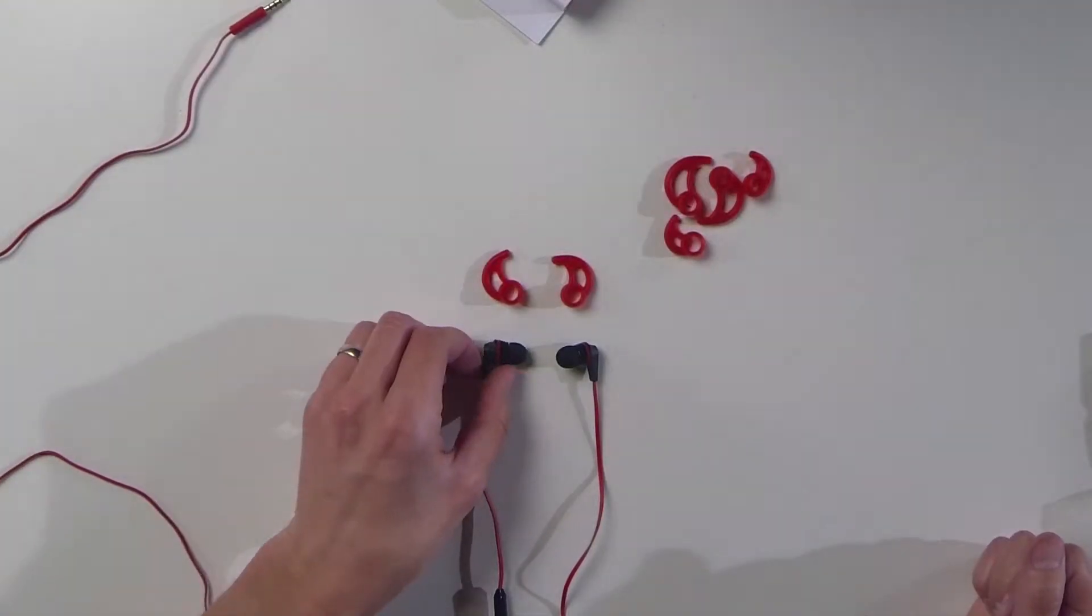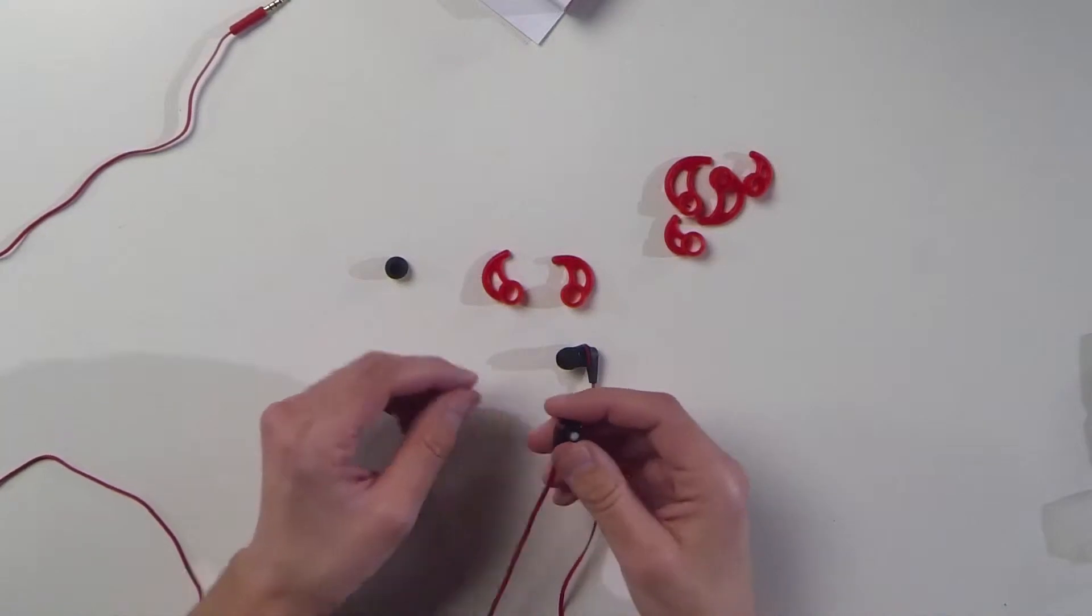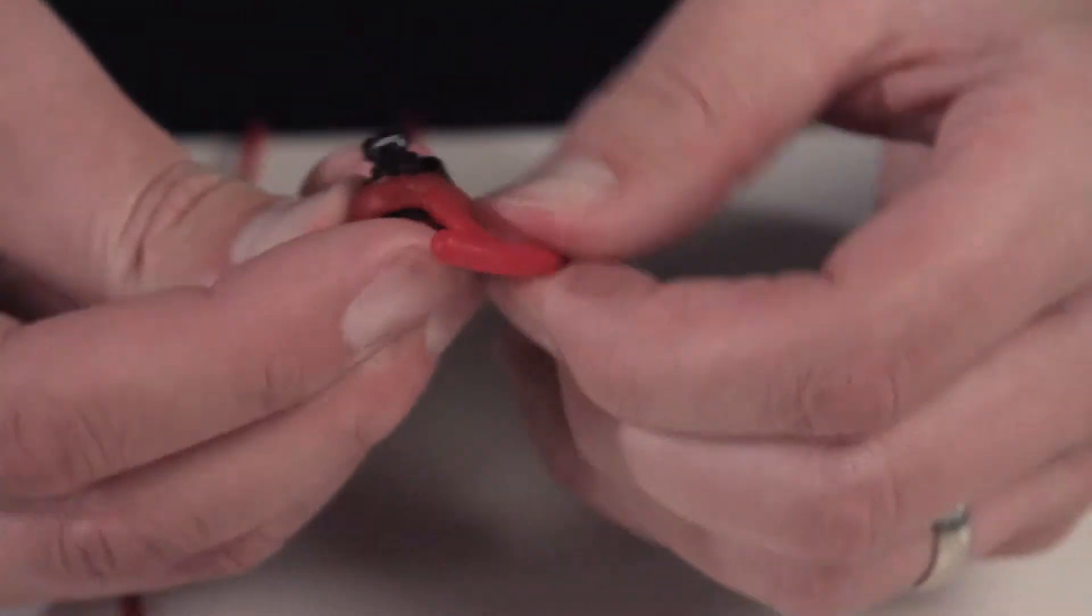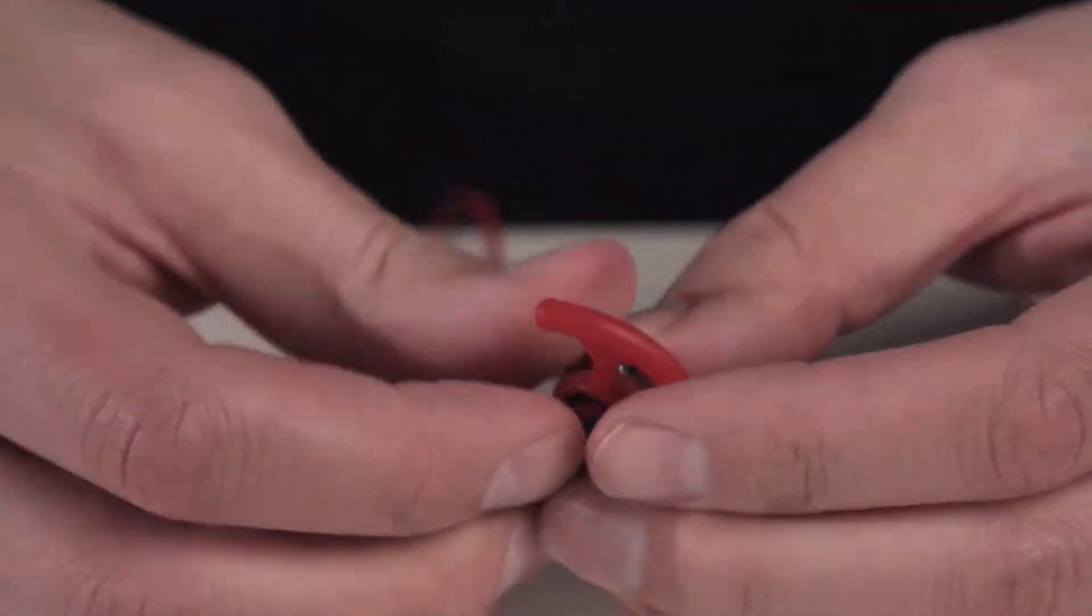Let's start with the left side earbud. Remove the silicone ear tip. Hold the Bud Lock so that the wing's curve is on the left side. Point the earbud up and stretch the round part of the Bud Lock over the body of the earbud.